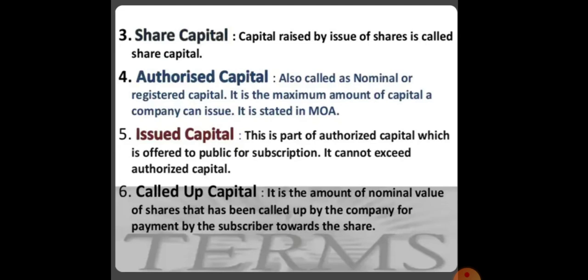The next is issued capital. Out of the authorized capital, how much capital has been issued — that is called issued capital. It is a part of the authorized capital which is offered to the public for subscription. It cannot exceed authorized capital — for example, if the limit is 10,000 shares, we can issue only up to 6,000 shares; we cannot exceed the maximum limit.